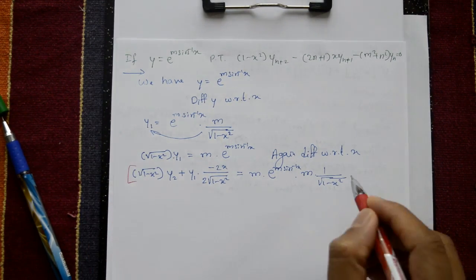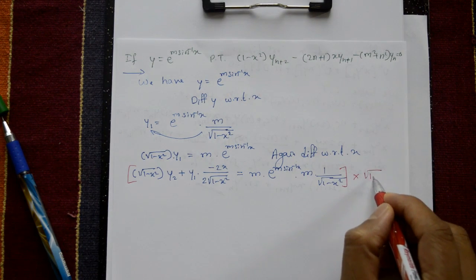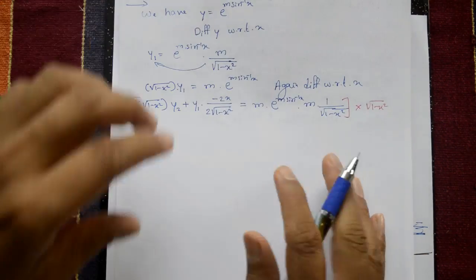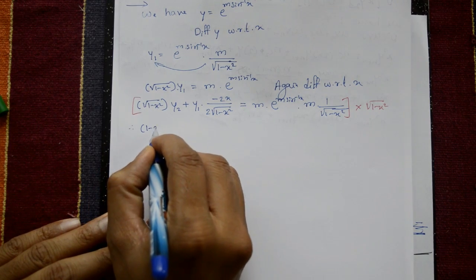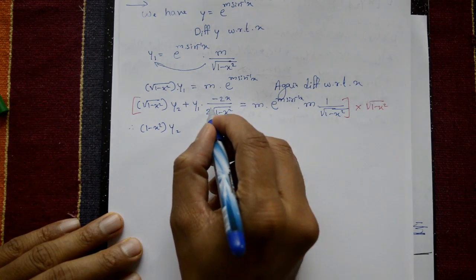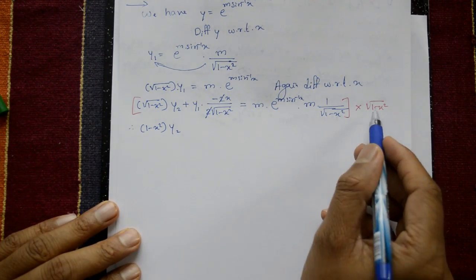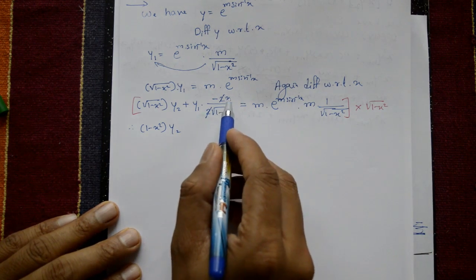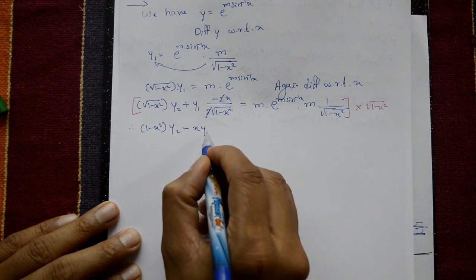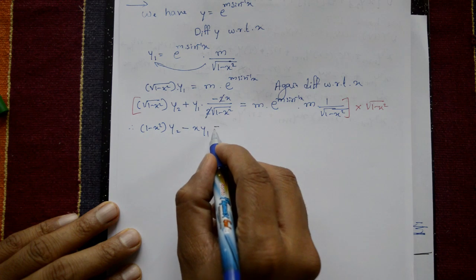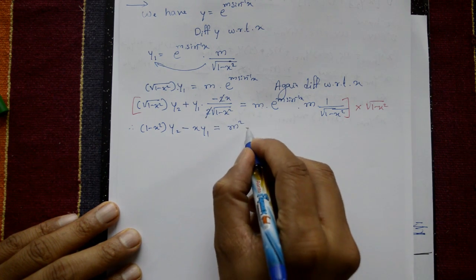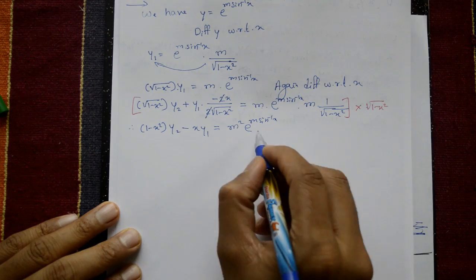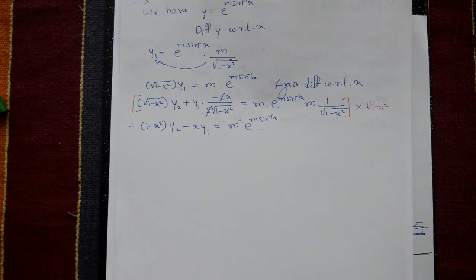Take the whole equation and multiply by square root of 1 minus x square. Root root get cancelled, that is 1 minus x square, y2. Multiply by square root of 1 minus x square and divide by square root of 1 minus x square, these get cancelled. Only remaining minus x·y1 equal to m into m, that is m square, e to the power m sine inverse x.